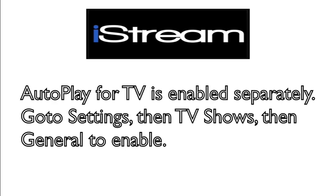If that second source had failed, it would have tried the next one and then the next one until it either found one that played or ran out of sources. Keep in mind we only enabled autoplay for movies. To enable it for TV you repeat the same steps, only this time go into settings and then TV and enable it from there. That's a look at autoplay with failover.